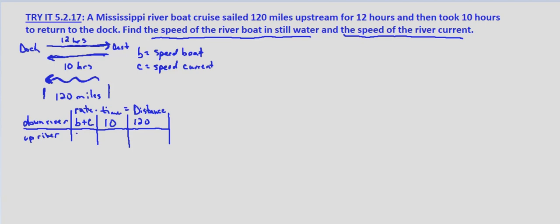Up river, it's going to be against the current, so B minus C. Our time is 12 hours and our distance is still 120 miles. So to set up our system of equations, we have 10 times B plus C, rate times time, equals 120. And then 12 times B minus C, rate times time, equals the same distance 120.